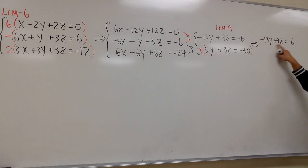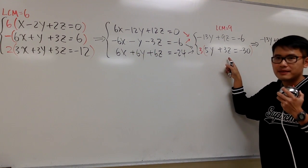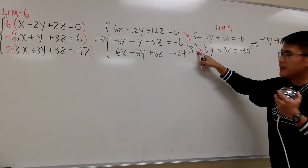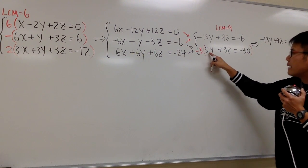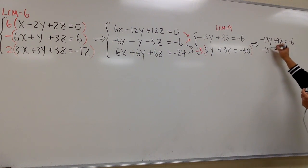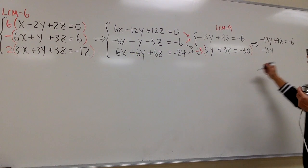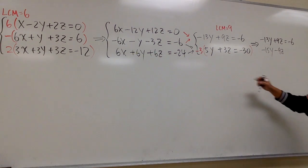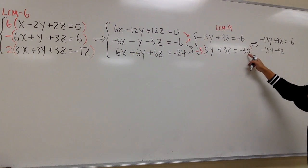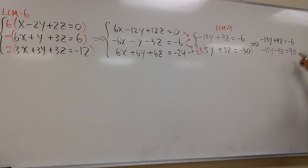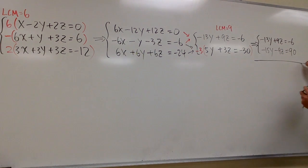Since we already have a positive 9z, we should produce a negative 9z, so we multiply by negative 3. Negative 3 times 5y gives negative 15y. Negative 3 times 3z gives negative 9z. And be sure you also do: negative 3 times negative 30, which gives us positive 90. At this stage, we are so ready.